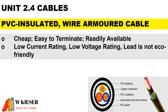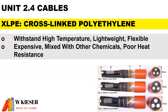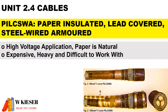The disadvantages of PVC insulated wire armoured cable: it has low current rating, low voltage rating, and the lead used for the armoring is not eco-friendly. XLPE, which is cross-linked polyethylene cable, can withstand high temperature, is lightweight and flexible. The disadvantages: it is expensive, can be mixed with other chemicals, and has poor heat resistance.